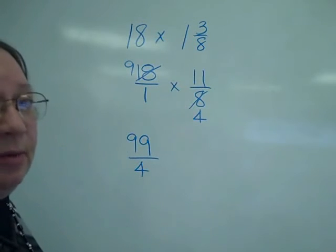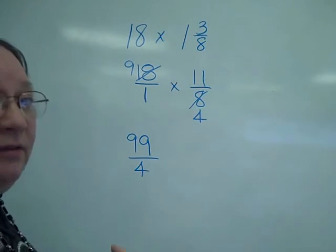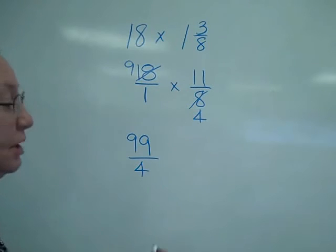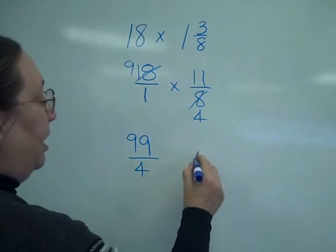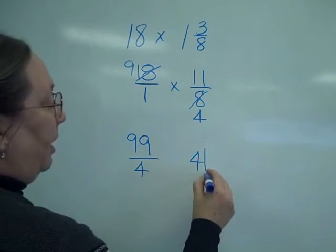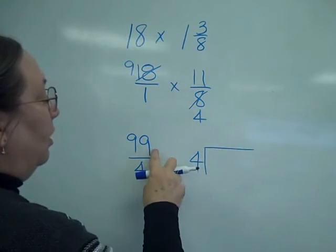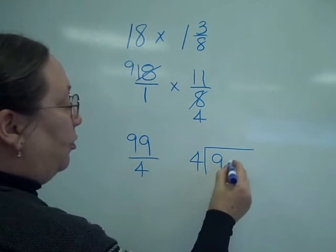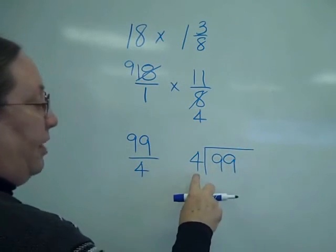This also needs to be reduced because 99 fourths is an improper fraction. So, I'm going to come over and I'm going to take the bottom number or the denominator into the top number or the numerator. So, dividing.